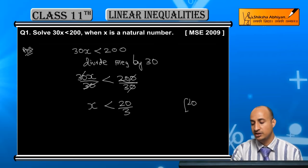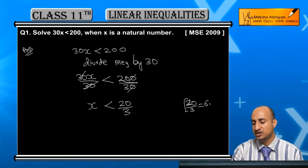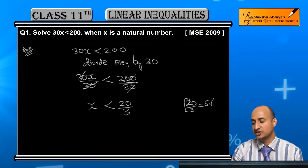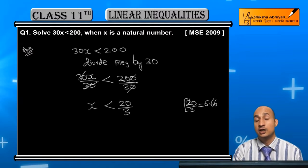20 by 3 is around 6.66. So this will come out, that means x's value is less than 6.66.